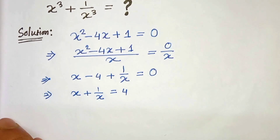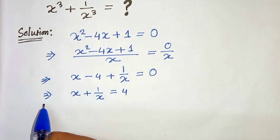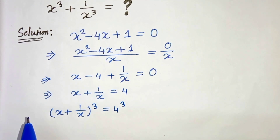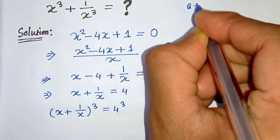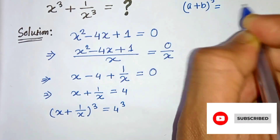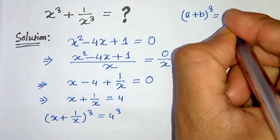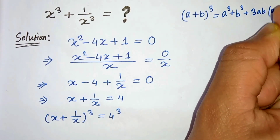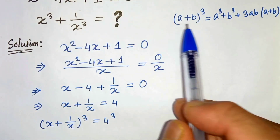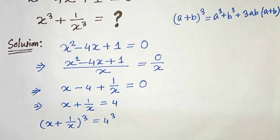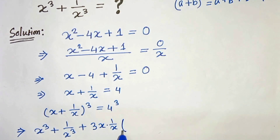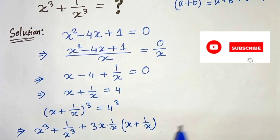Now we will cube both sides. So x plus 1 over x, whole cube, equals 4 cubed. We know that a plus b whole cube is a cubed plus b cubed plus 3ab times a plus b. Applying this, we get x cubed plus 1 over x cubed, plus 3 times x times 1 over x times x plus 1 over x, which equals 4 cubed.